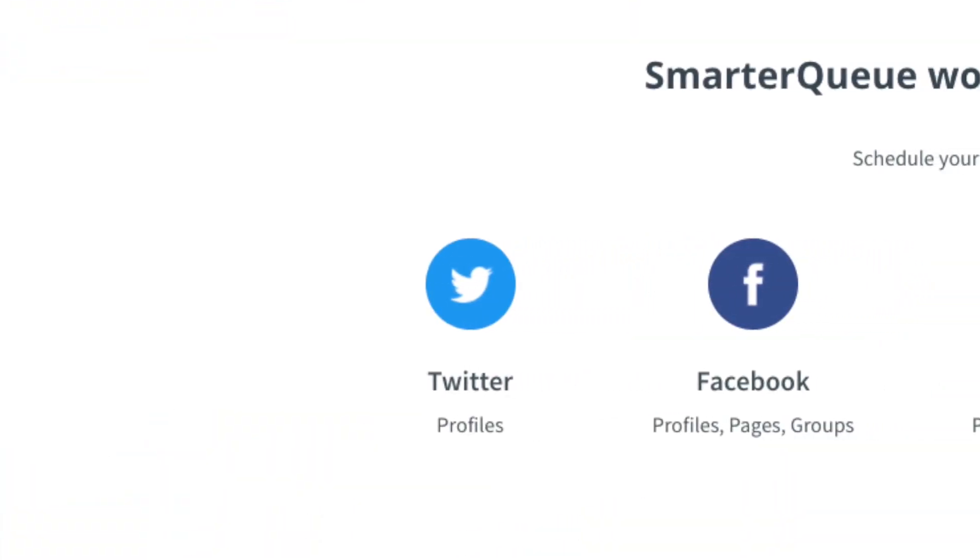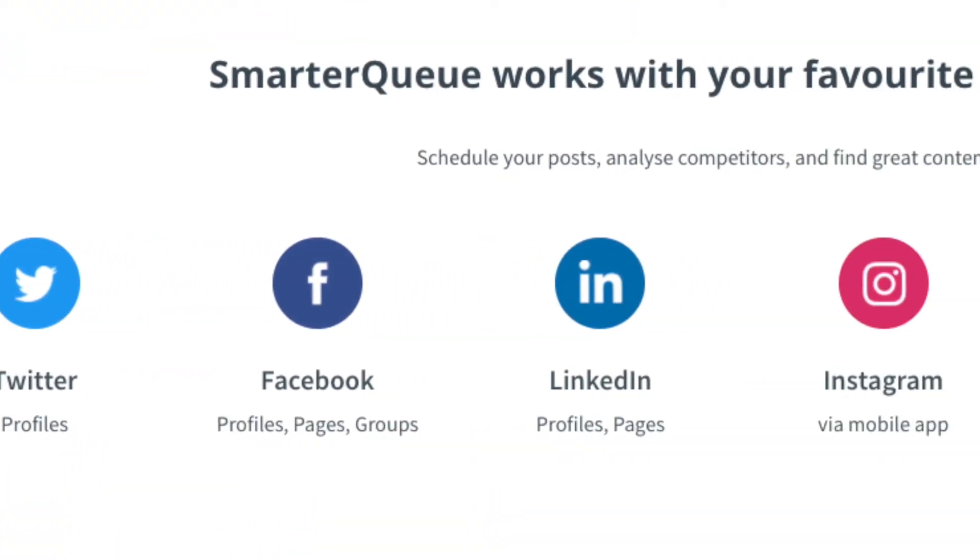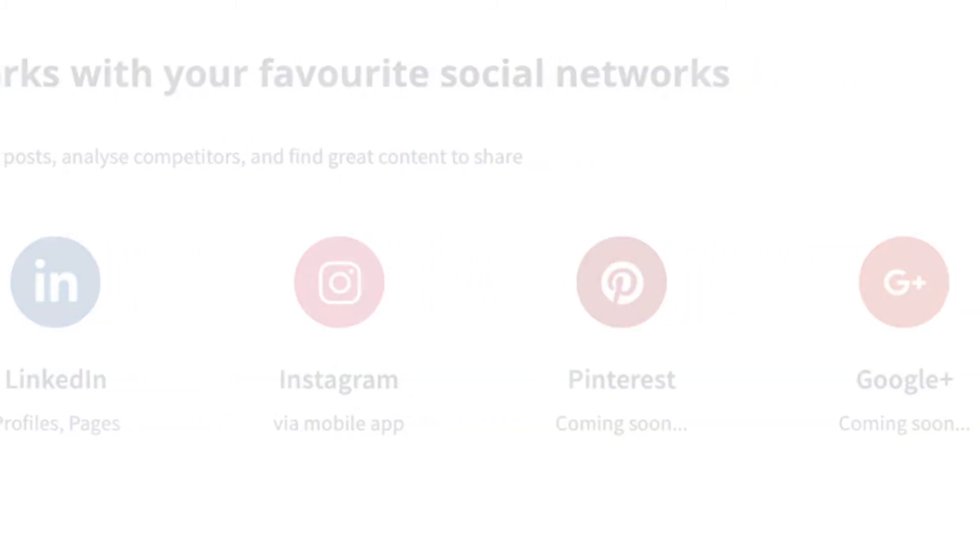RecurPost's second tier comes in at $25 a month, which is very similar to SmartQueue's first tier, but for the extra $5 you get 1,000 posts in your queue, and you can post 20 times a day per platform. They all have a pretty solid user experience, but we do love SmartQueue's the most. The ability to find old content that you or someone else has posted, edit it really easily, and add it again to your queue is particularly awesome. SmartQueue also supports the exact same social networks as RecurPost, but has added a coming soon for Pinterest.